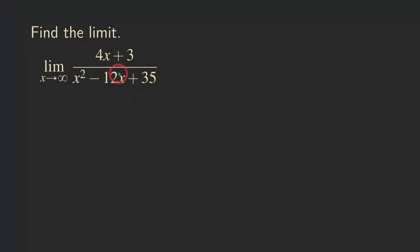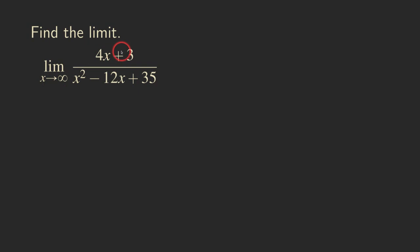So how do we do this? If we consider x approaching infinity, you can see that the top is approaching infinity — four times infinity plus three gives you a big number. And then if you have infinity right here, you're actually getting infinity minus infinity. That's actually an indeterminate form, so we cannot apply the limit laws directly to the problem.